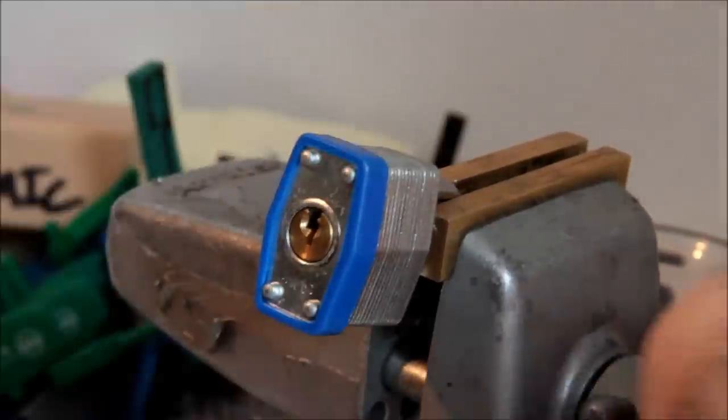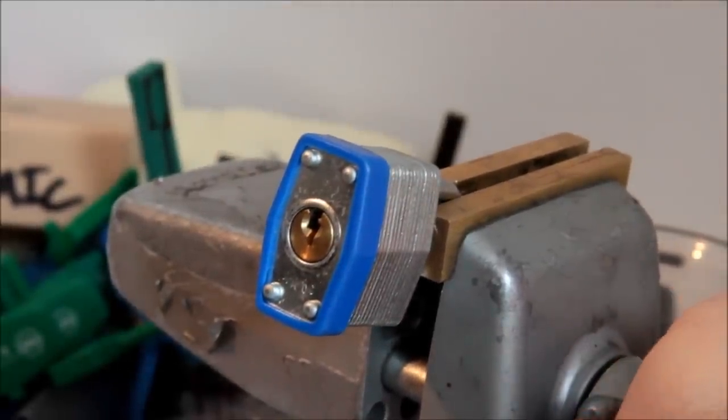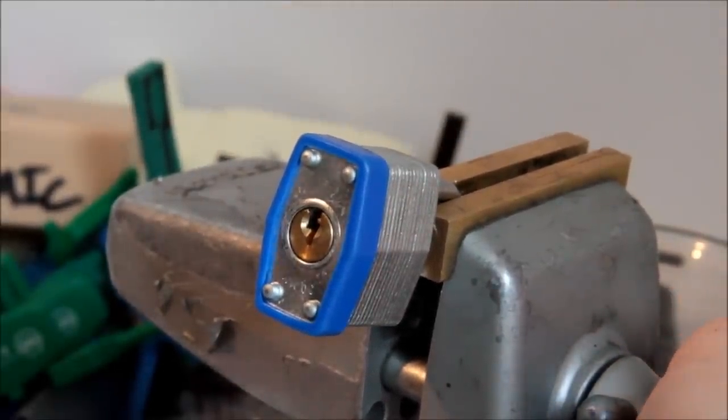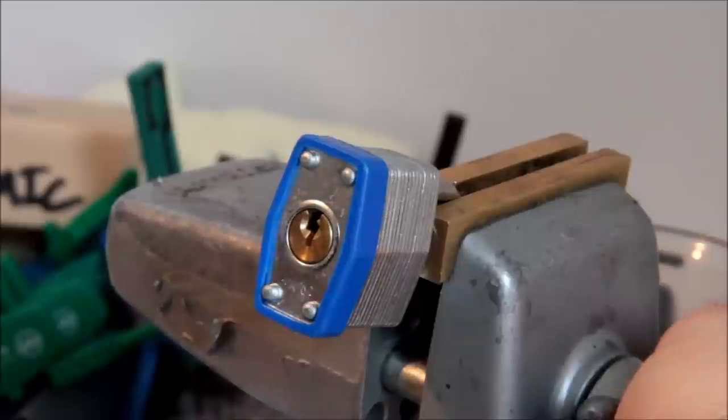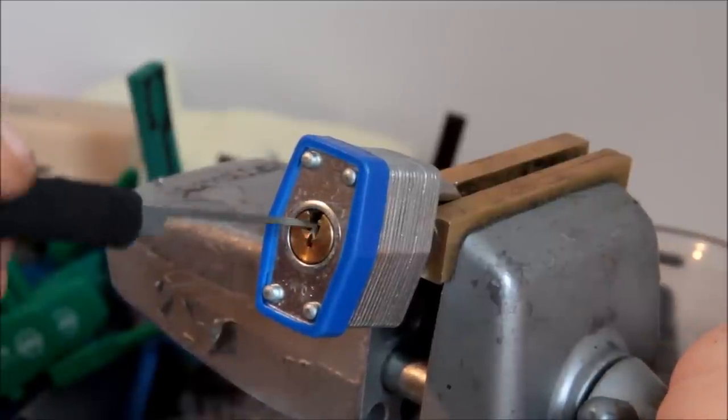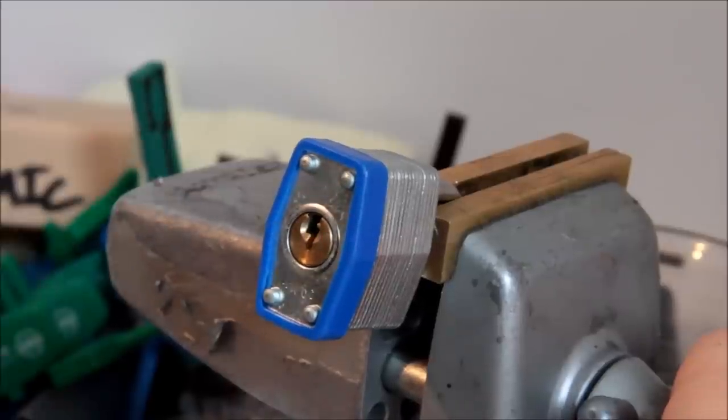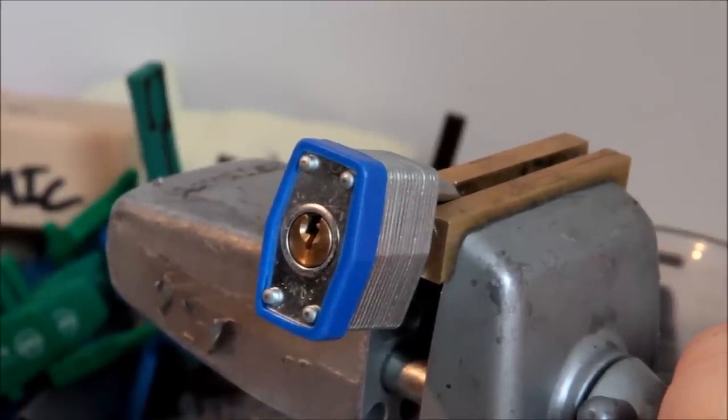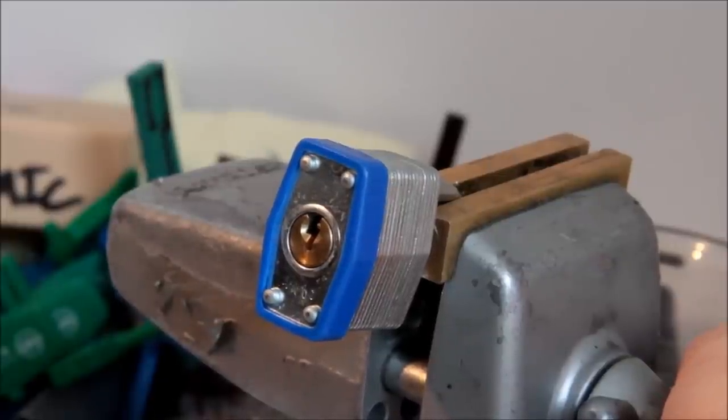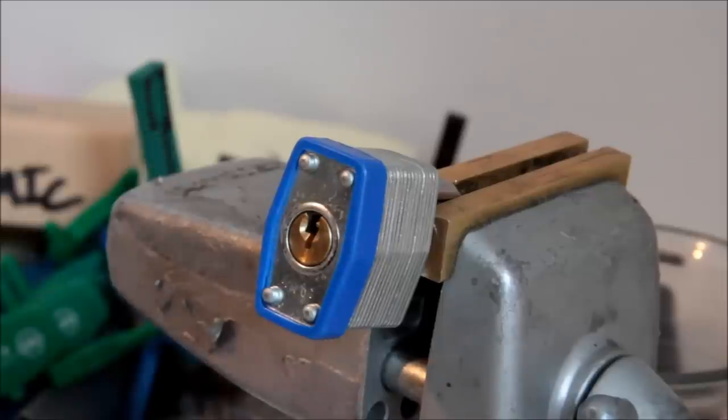And let's just grab the third pick. Let's pick something up randomly. Will this work? It's a little too fat. That'd be amazing to pick it with one of those, but that Bogota is too easy. How about an offset diamond?